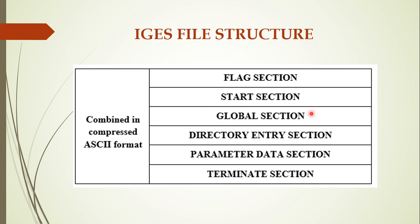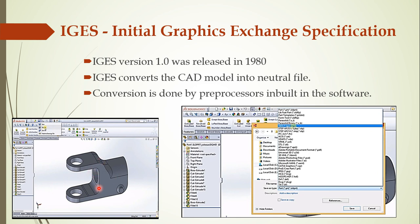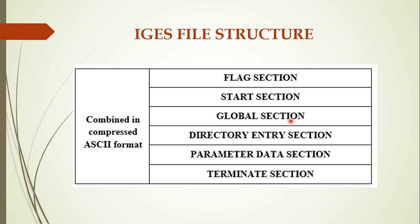The start section and the global section are actually combined. These two sections include the pre-processing data of a particular drawing. For example, the drawing is made with the help of SOLIDWORKS software — that is pre-processing data. The name of the individual who made the drawing, the version of SOLIDWORKS used, the OS of the computer, the system specifications — all those things are specified under the start and global section.